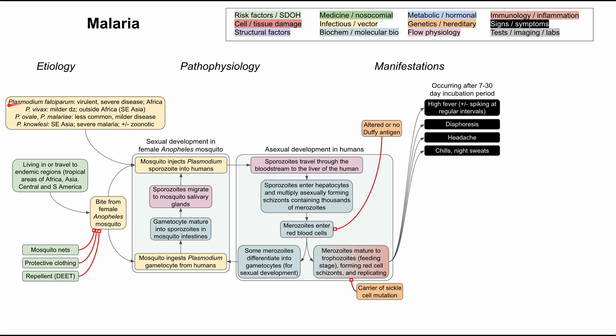We used to associate different Plasmodium species with different fever-spiking intervals — for example, spiking every two or three days — to help differentiate species, but that data isn't very robust and we don't rely on it anymore. Malaria patients also have other viral-type symptoms such as muscle pains, joint pains, diaphoresis, headaches, chills, and night sweats.